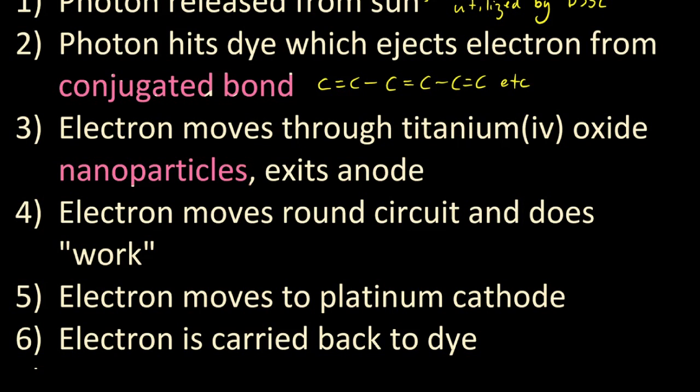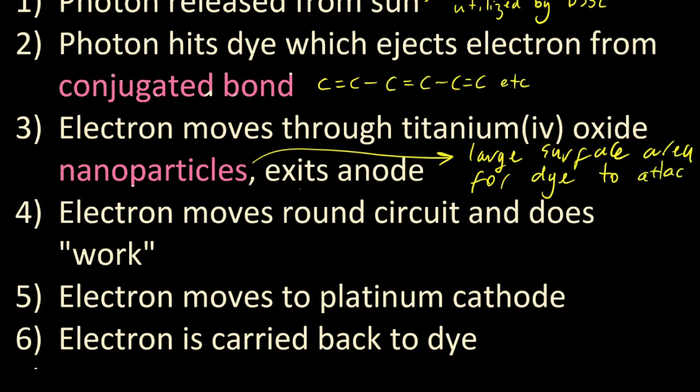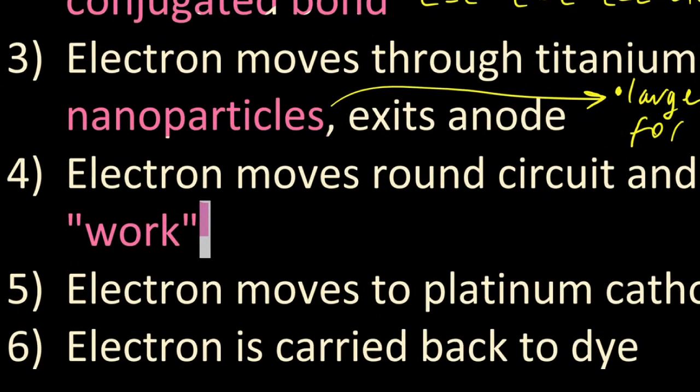The electron moves through the titanium dioxide nanoparticles. They've asked about those nanoparticles. They have a high surface area, they're very small, so lots of dye can be made available for this solar cell to work. And it also means that different wavelengths of light will also work.